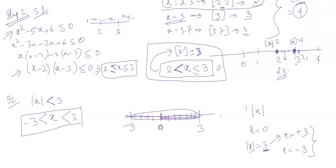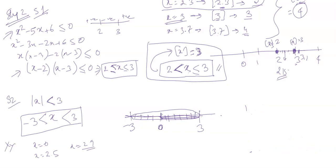If x lies between -3 and +3, x can take many values: x could be 0, x could be 2.5, x could be 2.9, and so on. If x = 0, then box of x is 0. If x = 2.5, then box of x is 3. Notice you're getting two different values, so Statement 2 alone is also not sufficient to get your answer.